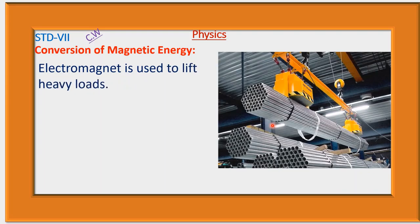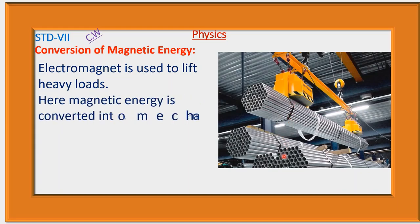An electromagnet is used to lift heavy loads. Using this electromagnetic lifter, we can lift heavy loads. Here, magnetic energy is converted into mechanical energy.